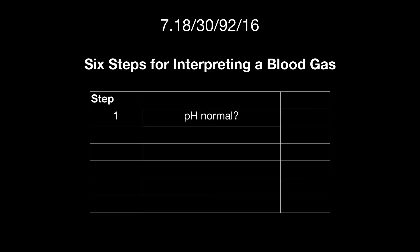Let's go back to our case. Here's the blood gas 7.18309216. I think there's six steps to interpreting a blood gas. It's a systematic approach. First, I look at the pH. Is it normal, is it acidic, or is it basic? In the case of this example, it's acidic.